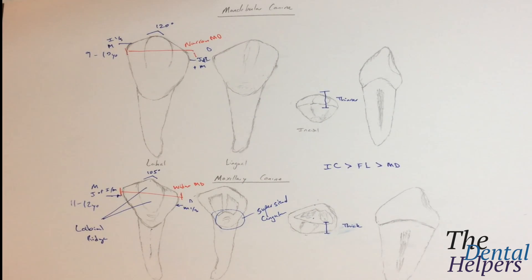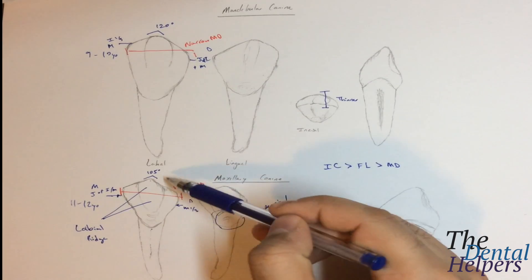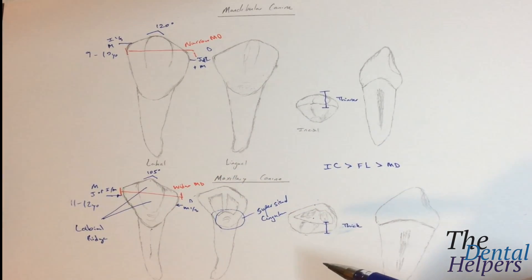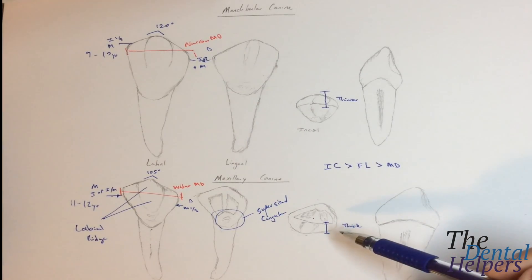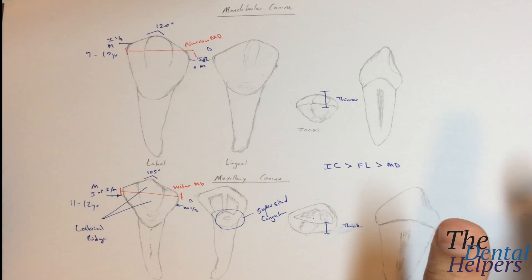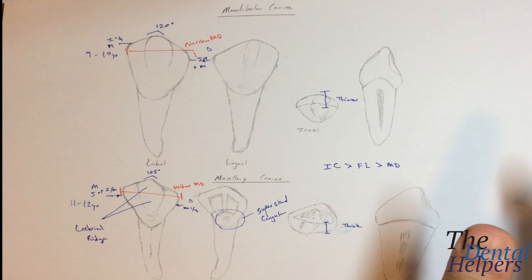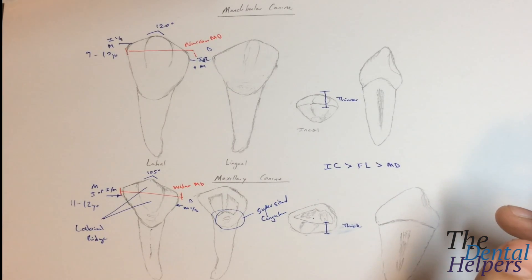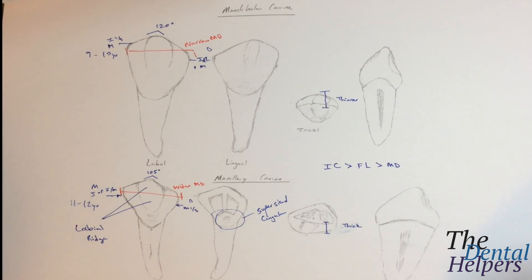The labial ridge — as you can see in the drawing — is going to be more pronounced on the maxillary. If you think about the maxillary: it's thicker, more pronounced, it's got a supersized cingulum, so everything's bigger on the maxillary. On the mandibular, everything is less pronounced, less noticeable, thinner. So if you have anything on the test for the canine saying something is exaggerated or more, automatically think maxillary. If it's going to be less noticeable, think mandibular.